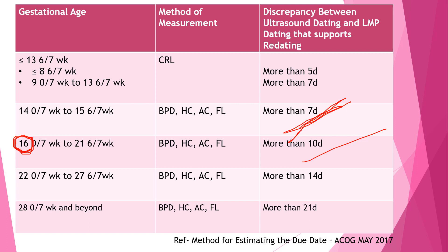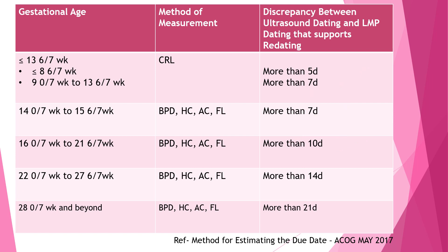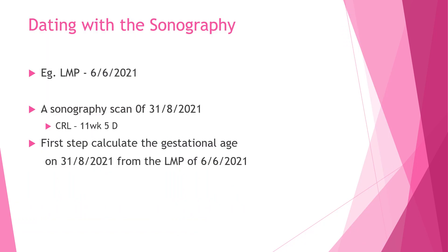Most patients present with a scan beyond 9 weeks gestation. From 9 weeks to 16 weeks, a 7-day discrepancy is allowed. From 16 weeks up to 22 weeks — the optimal dating window — a discrepancy of 10 days is allowed. This is how you grossly remember the ACOG dating table.